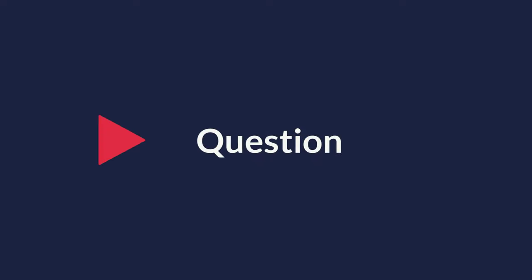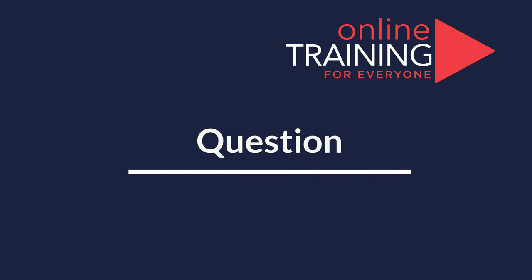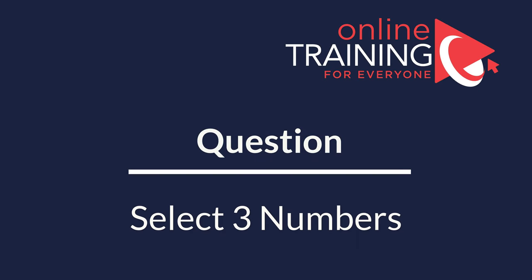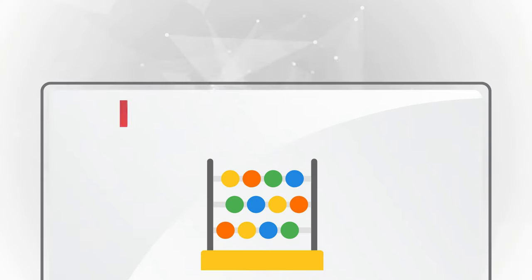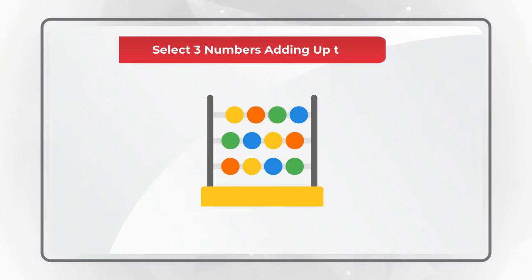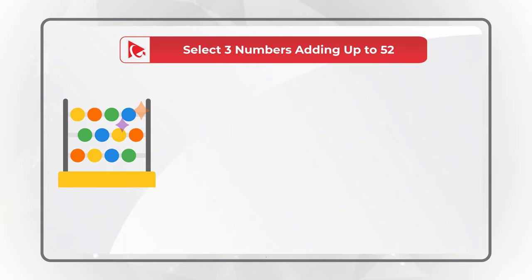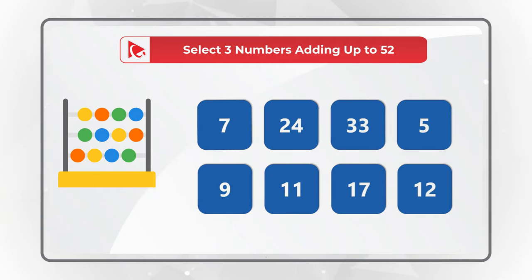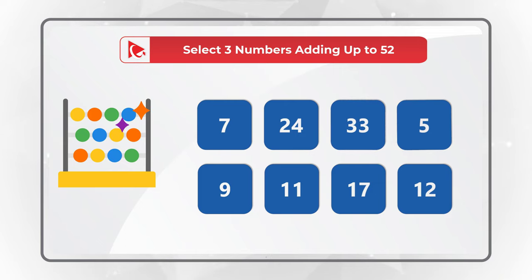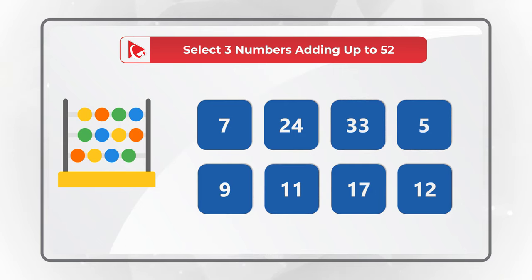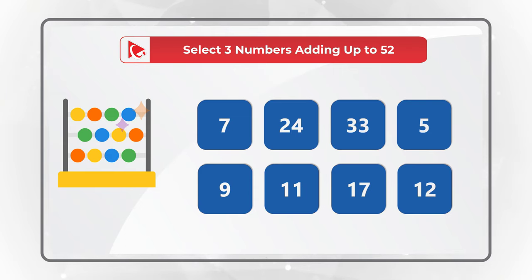Here is an unusual question, but we are starting to see it on the test more and more often. You need to select 3 numbers which add up to 52. There are 8 choices: numbers 7, 24, 33, 5, 9, 11, 17, and 12 are presented for selection.